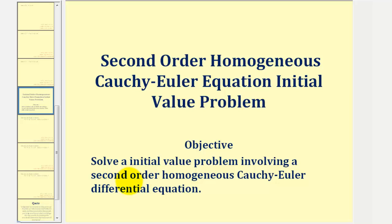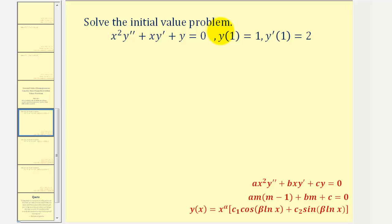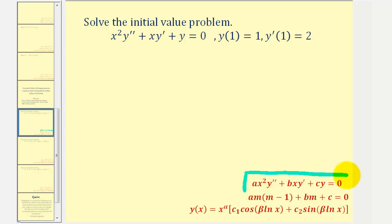Welcome to an example on how to solve an initial value problem involving a second order homogeneous Cauchy-Euler differential equation. To solve the initial value problem, we should recognize that we have a second order differential equation, and that it's homogeneous because the right side equals zero. More importantly, since the given differential equation fits this specific form, it's a Cauchy-Euler differential equation, which gives us a specific strategy to solve it. It's Cauchy-Euler because for each term, the degree of the coefficient equals the order of the derivative.